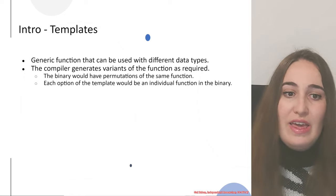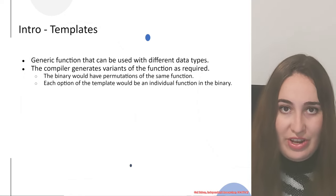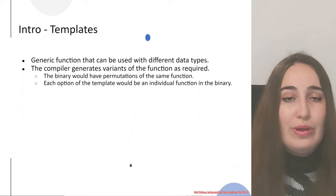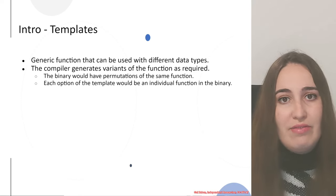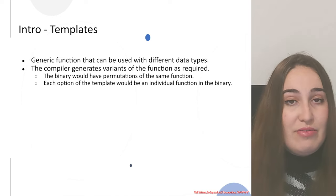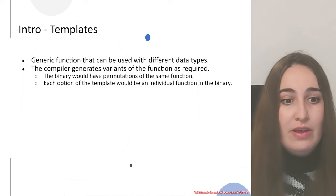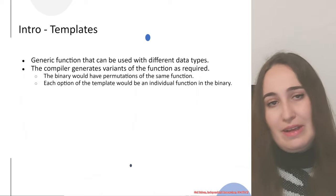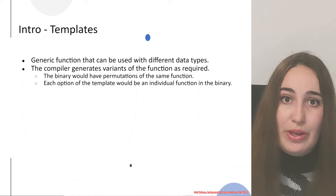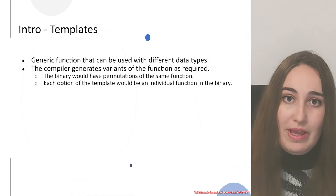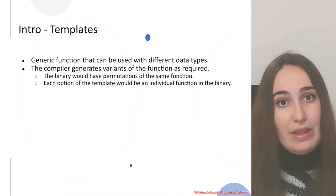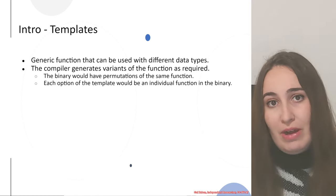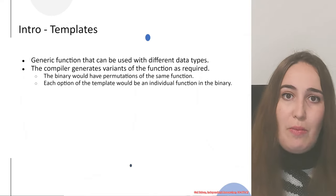Regarding an intro: if you don't know what templates are, they are generic functions that can be used with different data types. You can create a function that with different usages would have different types, and the function itself would change a little based on the types it uses. The compiler generates the variants of the same function as many times as required, so for each type used for the template, there would be a different function in the binary. For one template, there could be many functions in the binary — it's like a macro that creates more and more functions when compiled.